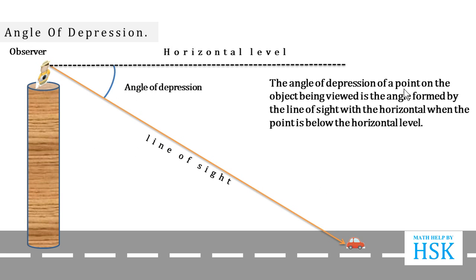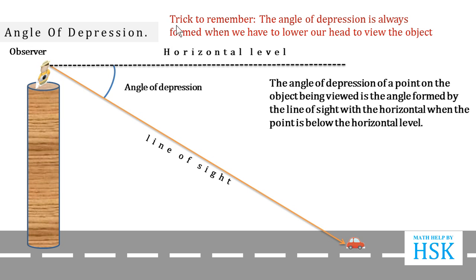We can define the angle of depression of a point: it is the angle formed by the line of sight with the horizontal when the point is below the horizontal level. Similarly, you can remember the angle of depression — it is always formed when we have to lower our head to view the object. Just connect lowering your head with angle of depression, and you will never forget it.